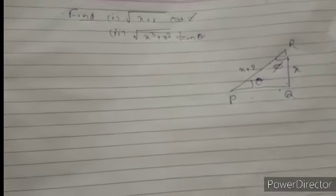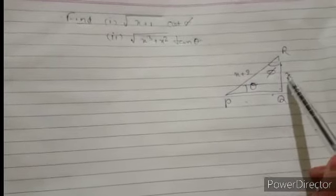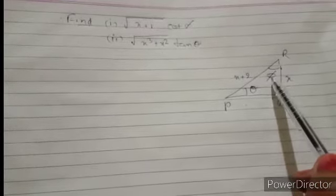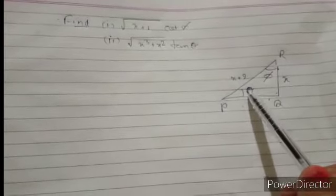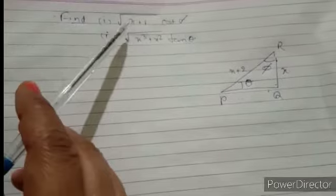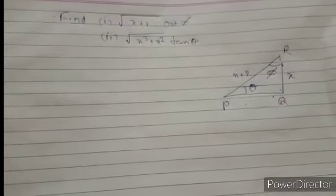The first question: In triangle PQR, it is a right angle triangle with right angle at Q. Side PQ is given as x, side PR is given as x plus 2, angle R is given as φ (phi), and angle P is given as θ (theta). These are the notations we use to denote the angles. You have to find the value of root(x+1)·cot φ, and the second part: root(x³+x²)·tan φ.